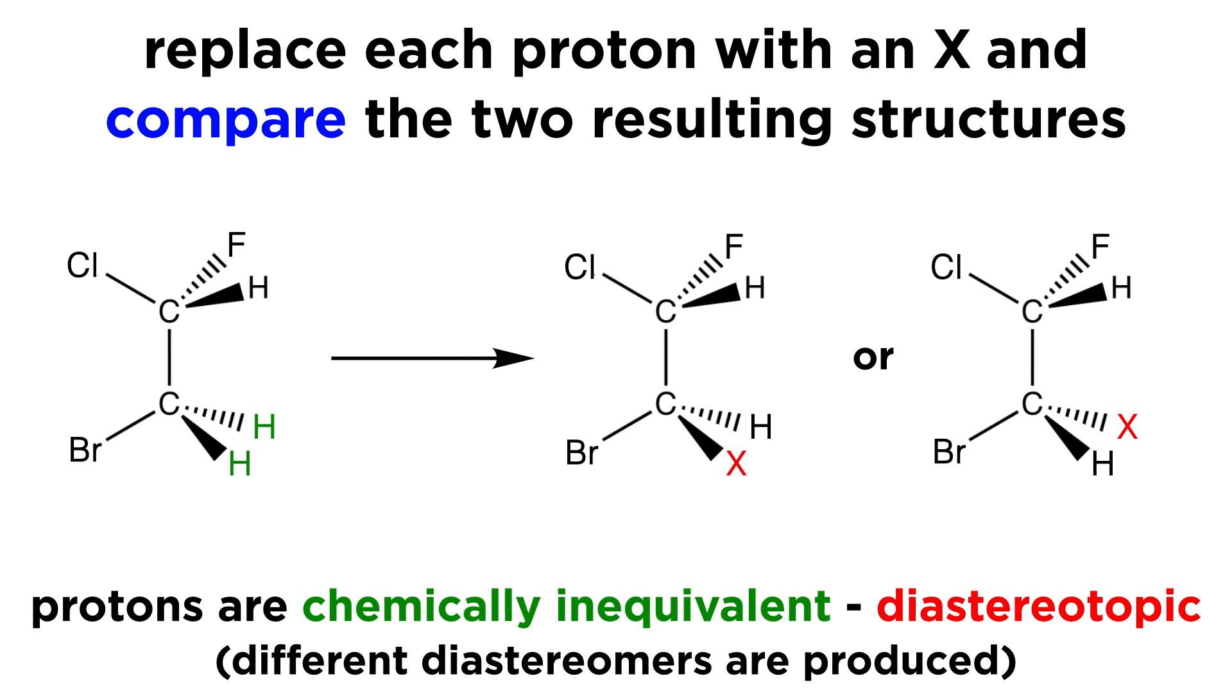Now let's say that the two compounds again are not identical because they are diastereomers of one another. Again, by changing the groups, a chiral center is being generated, and the two compounds have opposite stereochemistry at that center. But due to the presence of one or more other stereocenters, they will not be enantiomers. They will be diastereomers.